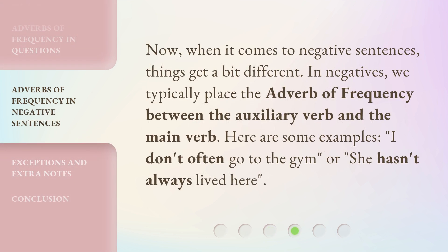Now, when it comes to negative sentences, things get a bit different. In negatives, we typically place the adverb of frequency between the auxiliary verb and the main verb. Here are some examples: 'I don't often go to the gym,' or 'She hasn't always lived here.'